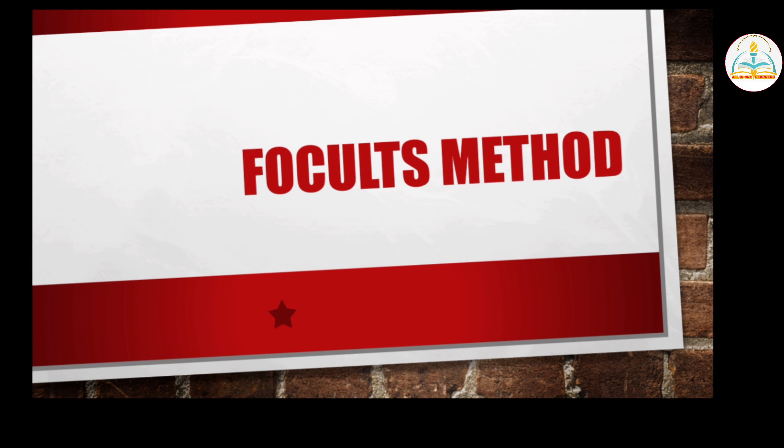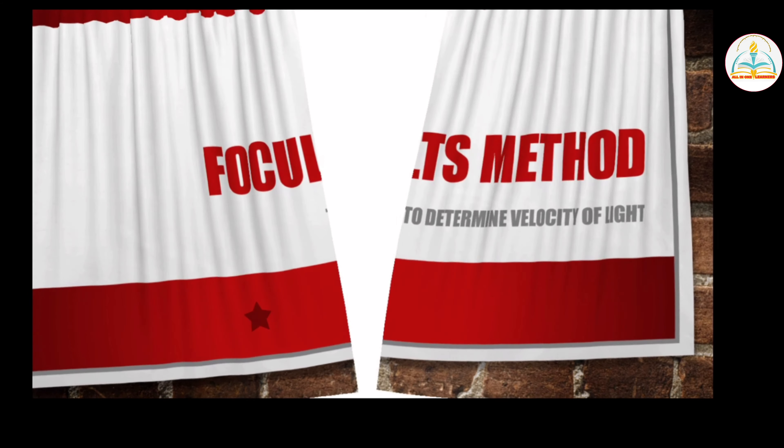Hello friends, welcome to my YouTube channel All-in-One Learners. Today we are going to study about Foucault's method, which is used to determine the velocity of light. The apparatus includes a convex lens, a glass plate, and a semi-transparent glass plate as a source of light.